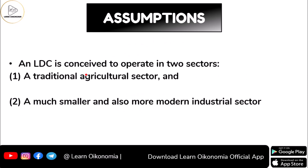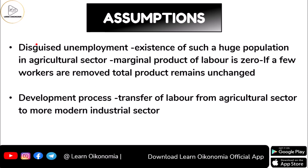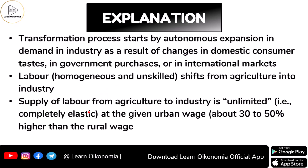In the agriculture sector, disguised unemployment exists such that even if you remove some laborers, it will not affect the total product — the marginal productivity of labor is zero. The development process can happen with this surplus labor: you take surplus labor from agriculture and transfer them to increase productivity and production in the industrial sector, which leads to ultimate growth in the economy.